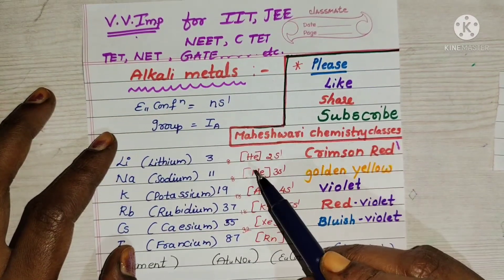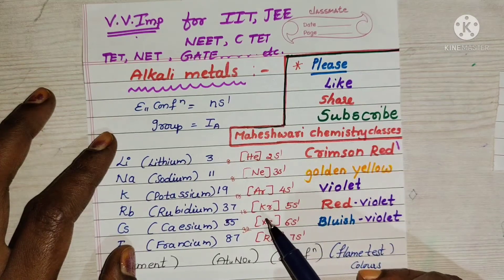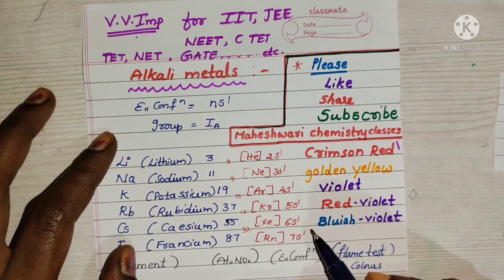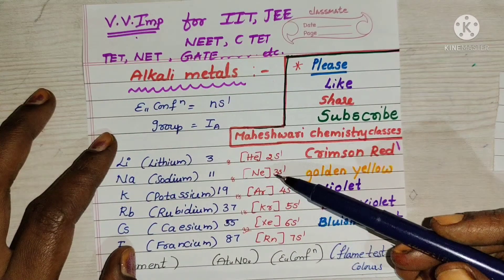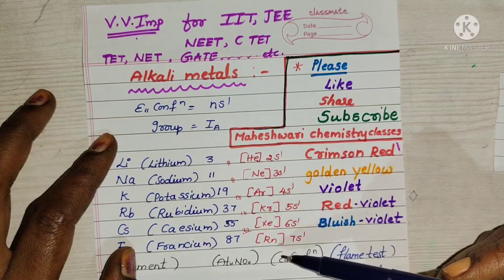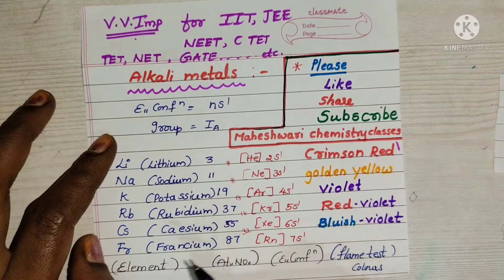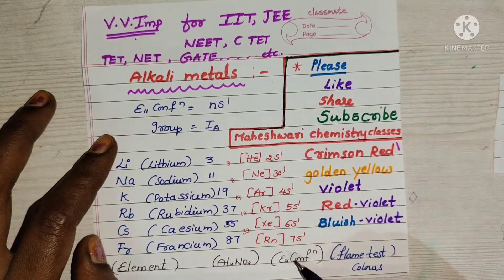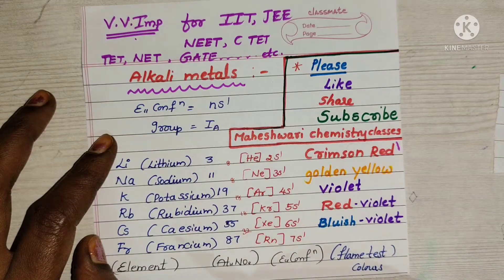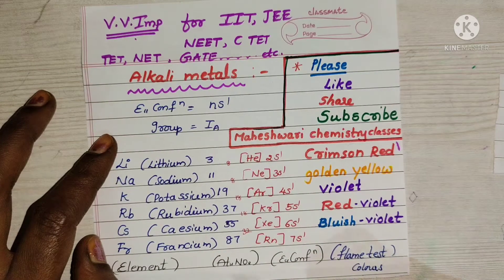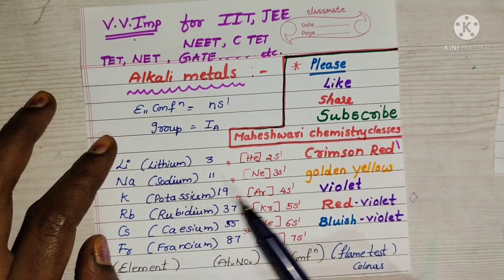Electronic configuration: helium 2s1, neon 3s1, argon 4s1, krypton 5s1, xenon 6s1, radon 7s1. Based on inert gas electronic configuration, we are representing the electronic configuration of alkali metals. Electronic configuration purpose I already explained in previous class, so you can verify there.